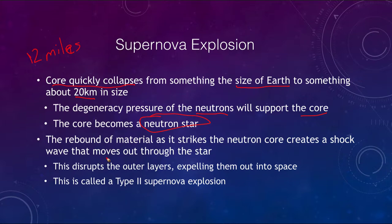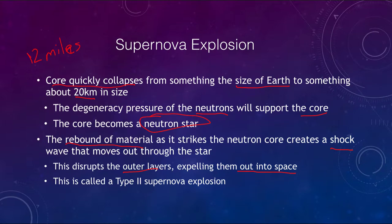As material falls into that newly formed neutron star, it will bounce and rebound, creating a shock wave that moves out through the star. This disrupts the outer layers and expels them out into space. The exact method of this is not completely understood and is something astronomers still strive to understand — how this bounce works to form a supernova.